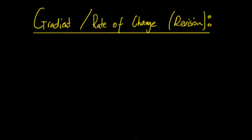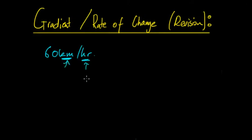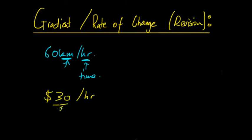Probably one of the most common examples is speed. If we have 60 kilometres an hour, this is a rate of change because you have kilometres per hour — a quantity with regards to another quantity. Another common example: if you are a mechanic you could charge $30 an hour, so that's a dollar amount compared to a number of hours. Or if you have a water bottle which is leaking, you could say it's leaking two litres a minute.